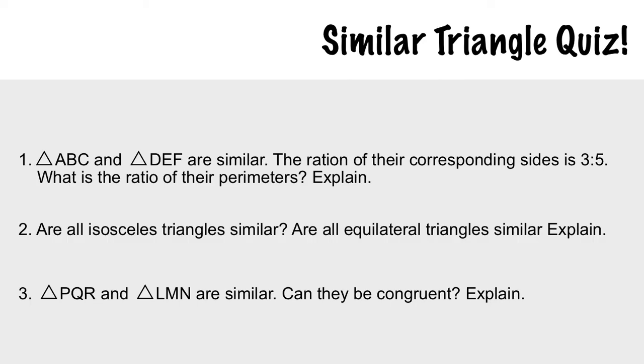Now for three skill testing questions. If triangle ABC and triangle DEF are similar, the ratio of their corresponding sides is 3 to 5. What is the ratio of their perimeters? Well, the perimeter is also going to be 3 compared to 5. Just a quick example: if one triangle has sides 3, 6, 9, and the other has 5, 10, 15, the first perimeter is 18 and the second is 30.